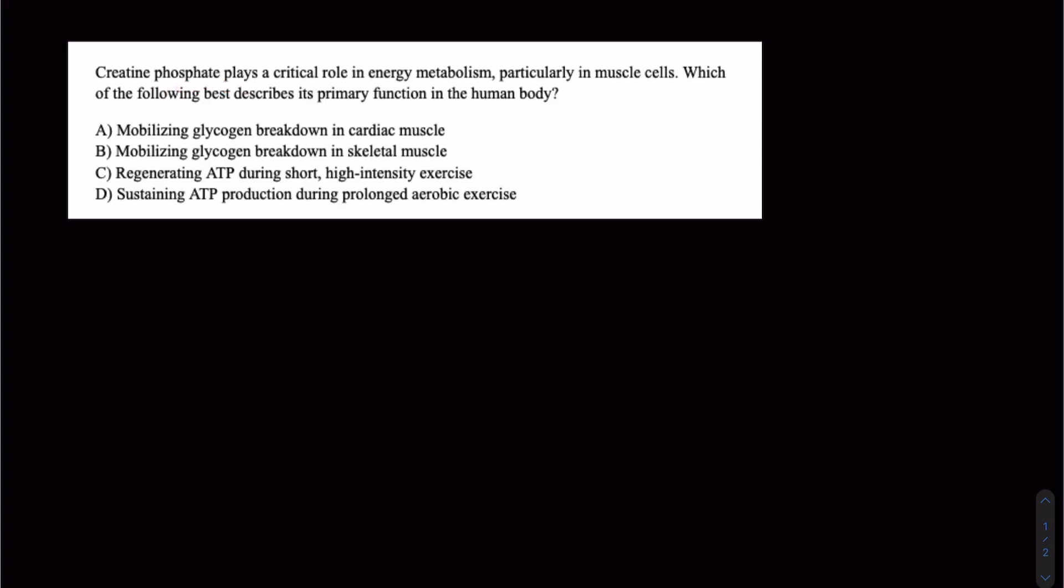So creatine phosphate plays a critical role in energy metabolism, particularly in muscle cells. Which of the following best describes its primary function in the human body?